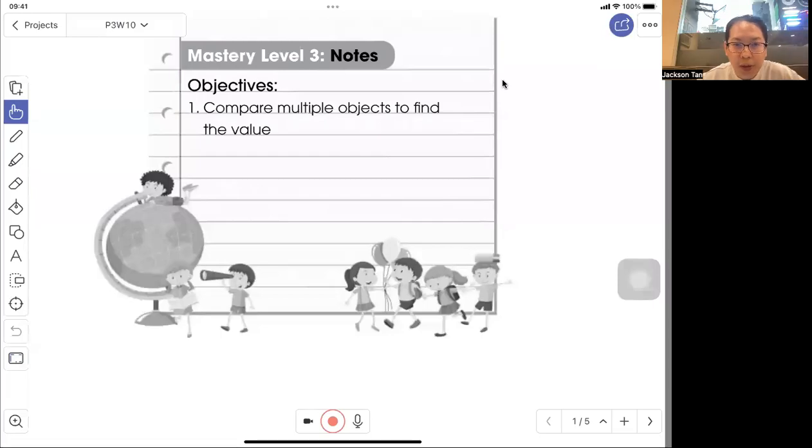Hello, I'm Mr. Tan. Today we are doing bubble three, mastery level three, compare multiple objects to find the value.